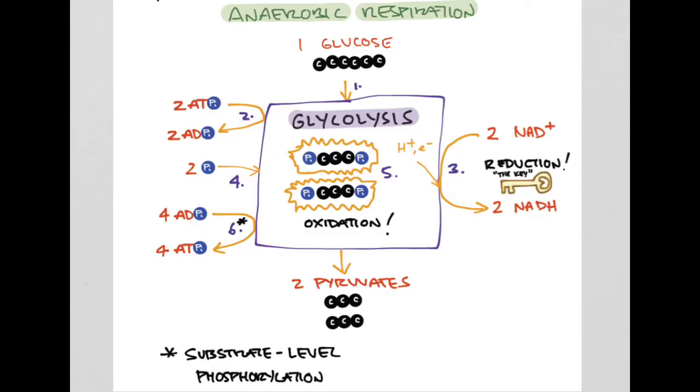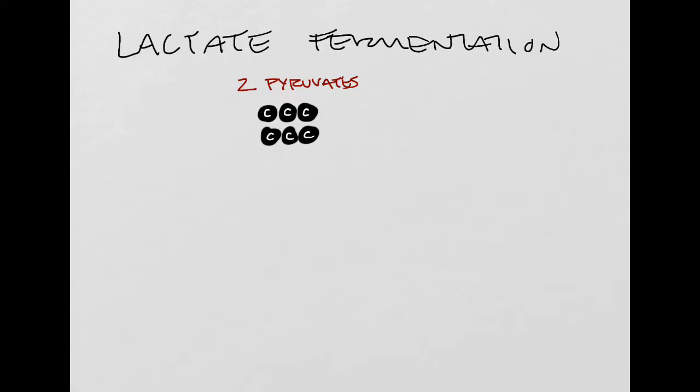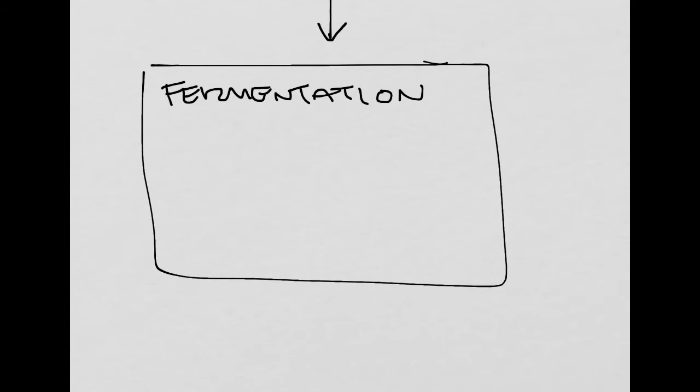So let's see how that works. You're going to take pyruvates. The two pyruvates that we saw come out at the end of this glycolytic pathway, or glycolysis. And these two pyruvates are going to be fed into our fermentation box. So I'm going to go ahead and draw a box here, and I'm going to write fermentation. So these two pyruvates are going to be dumped into this fermentation box.